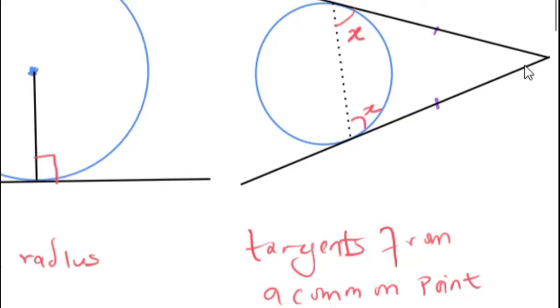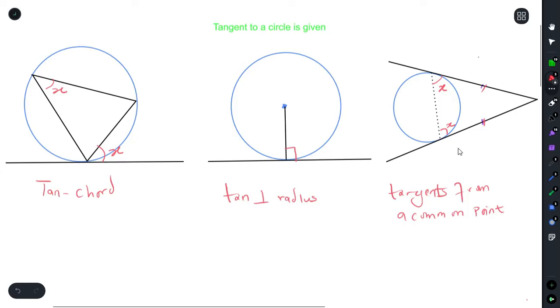This is due to the fact that the length of each of your tangents would be equal. Now you use this in questions when tangent is expressly given. You're literally told that this line or this line or these two lines are tangents.